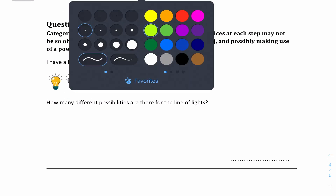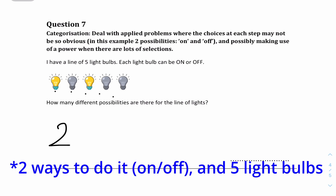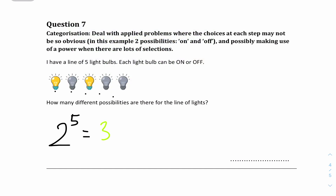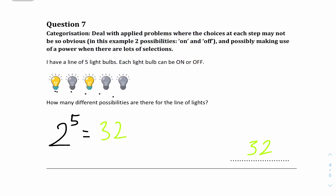The last question: there is a line of five light bulbs, each can be turned on or off. How many different possibilities are there? This is one of the basic counting principles. Each light has two options: on or off. There are five lights, so it's 2 to the power of 5 = 32. Another way to think about it: the first bulb has 2 options, times 2 for the second, times 2, times 2, times 2 — which is the same as 2^5 = 32.